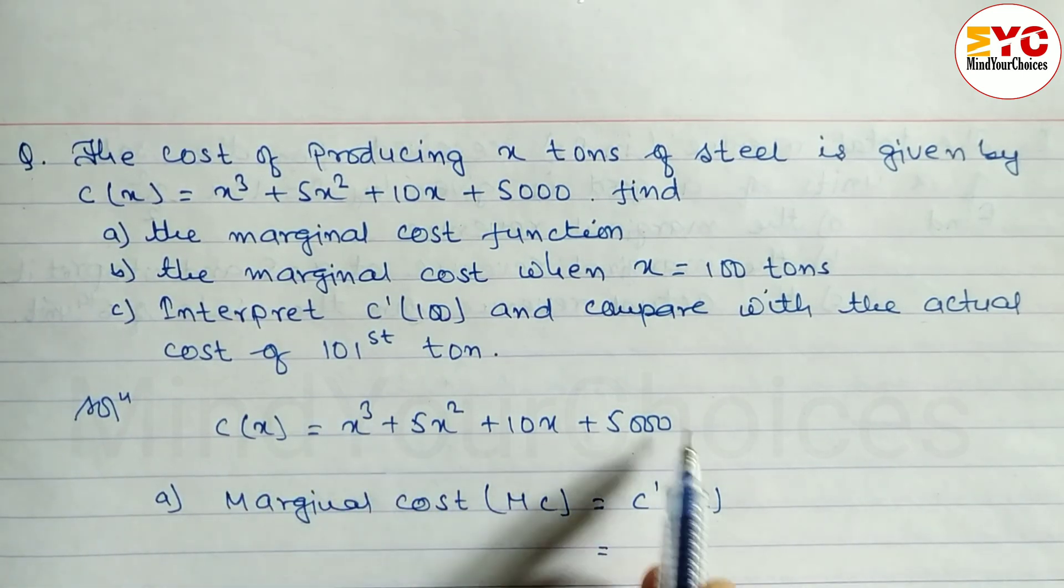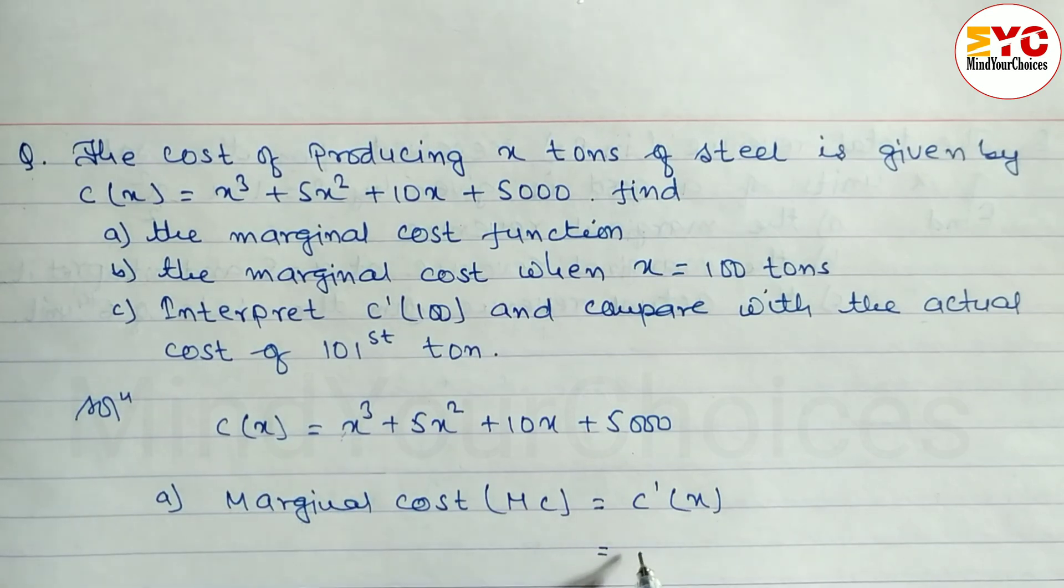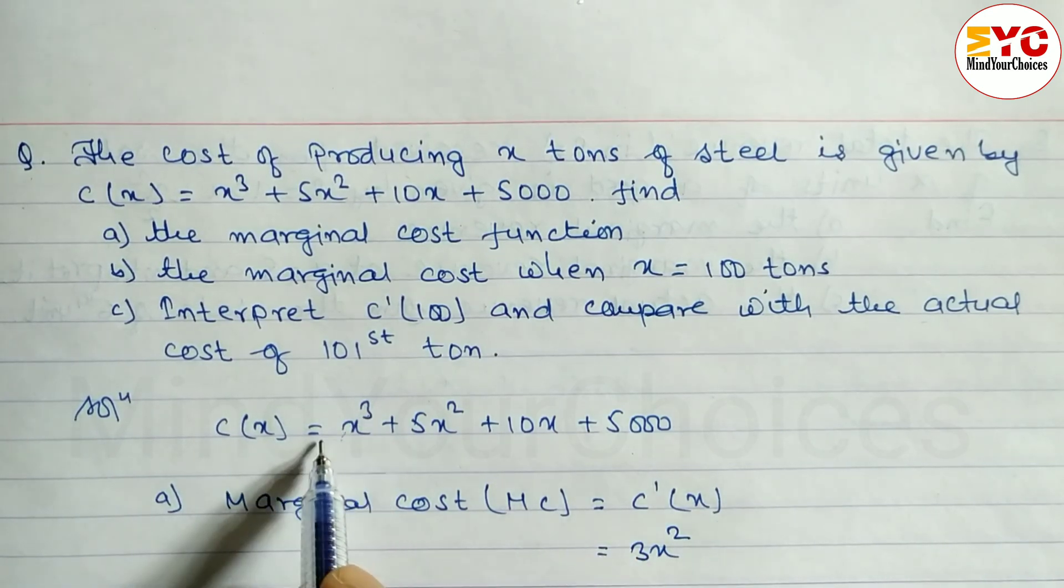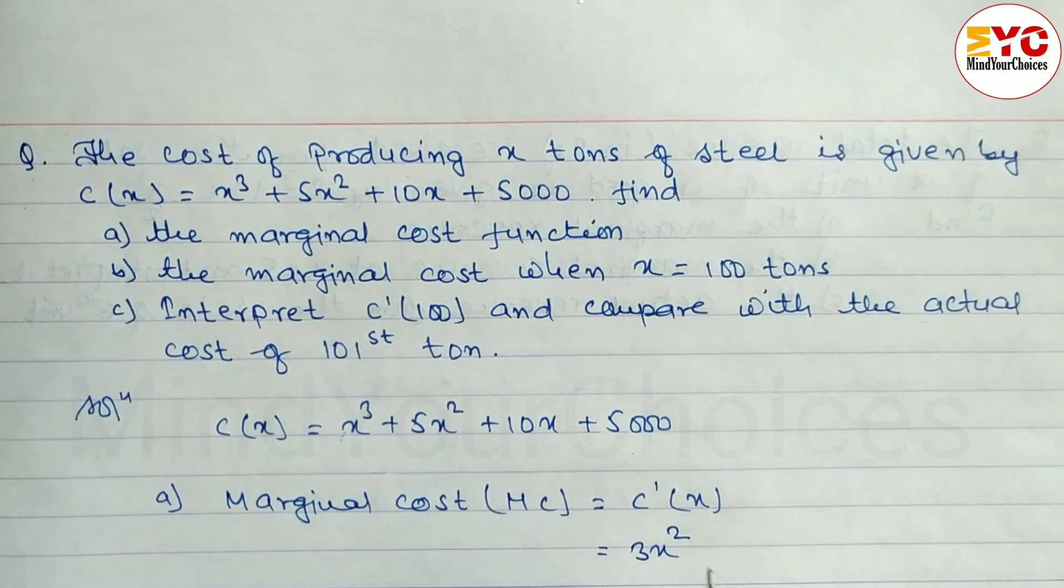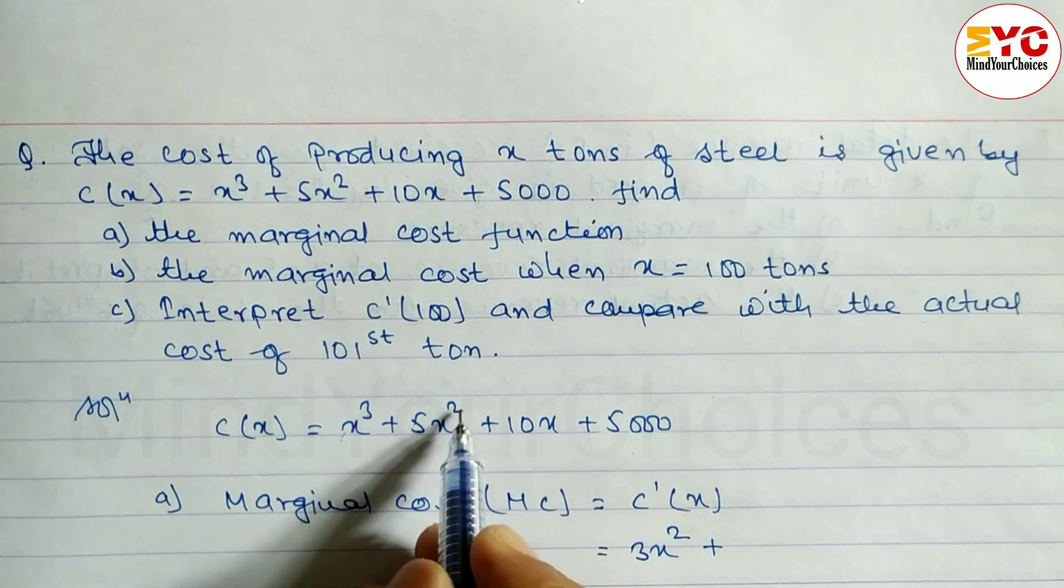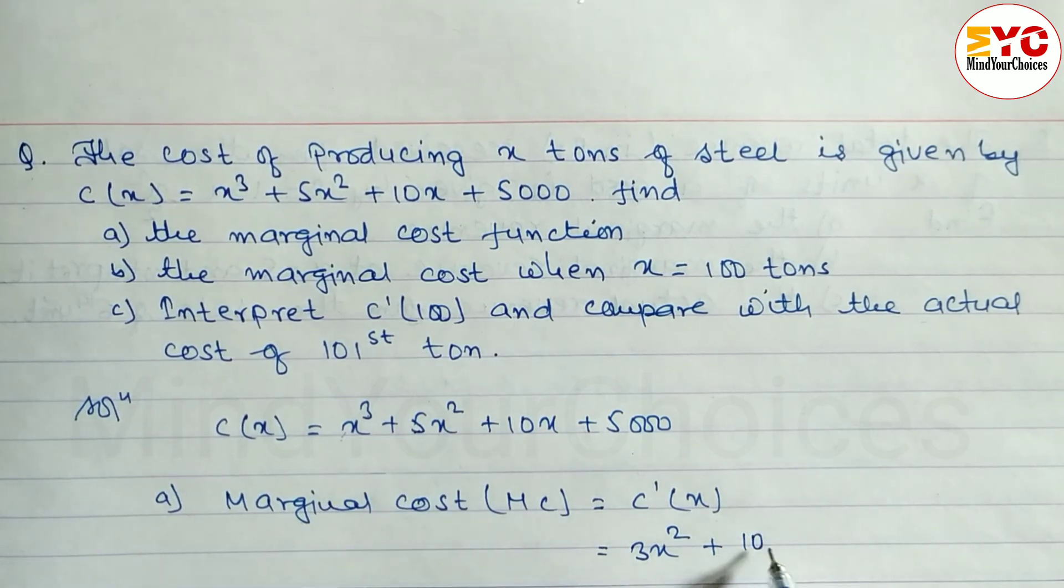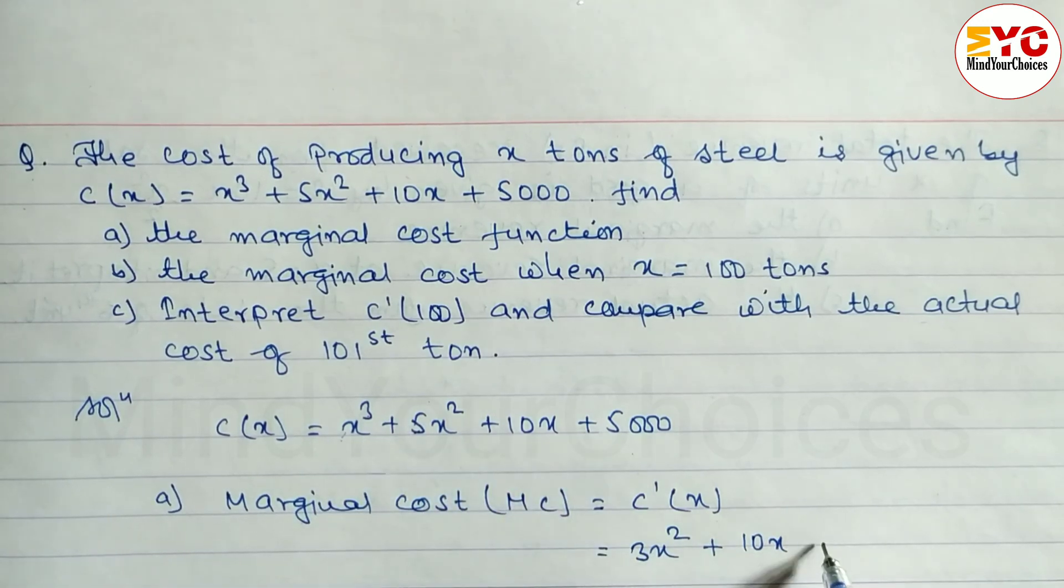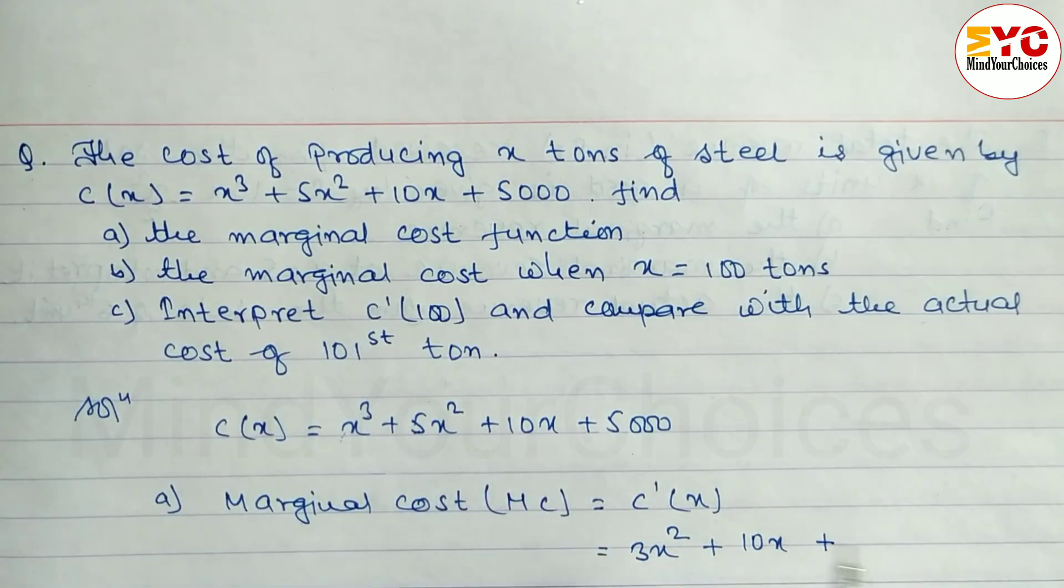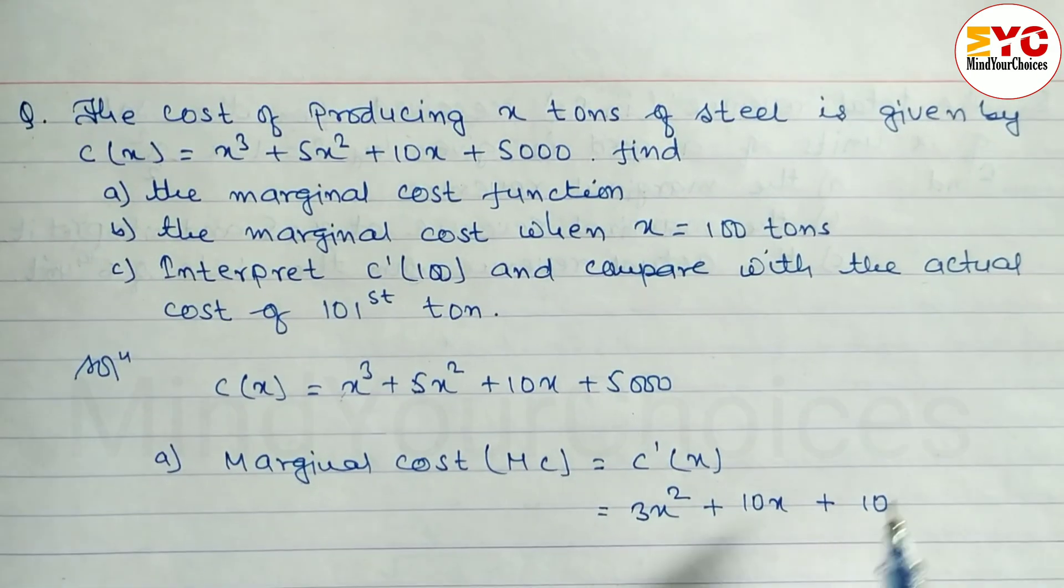The derivative of 3x³ is 3x². The power 3 comes down and power minus one. Plus, for this term, multiply constant by power: 5 into 2 is 10, and 2 minus 1 is 1. Plus, the derivative of 10x is 10. And the derivative of 5000 is zero.